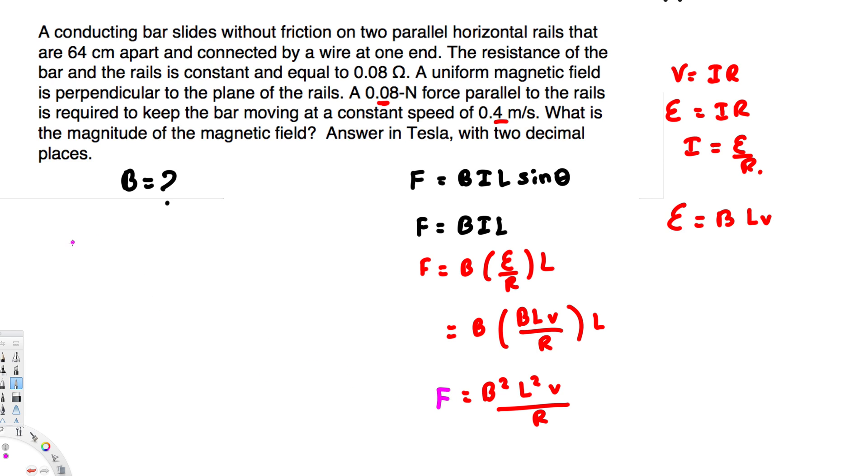Okay, so B² is going to be equal to F times R divided by L²v. Therefore, B is going to be equal to the square root of F times R divided by L²v. Now we can go ahead and plug our values.